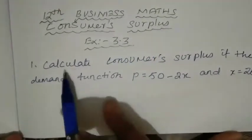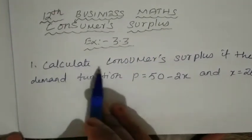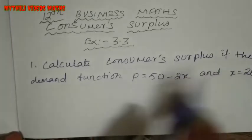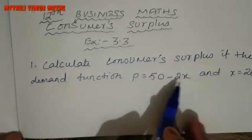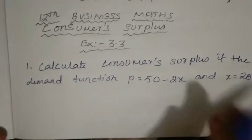3.3, first sum is: calculate Consumer Surplus if the demand function P equals 50 minus 2x and x equals 20.